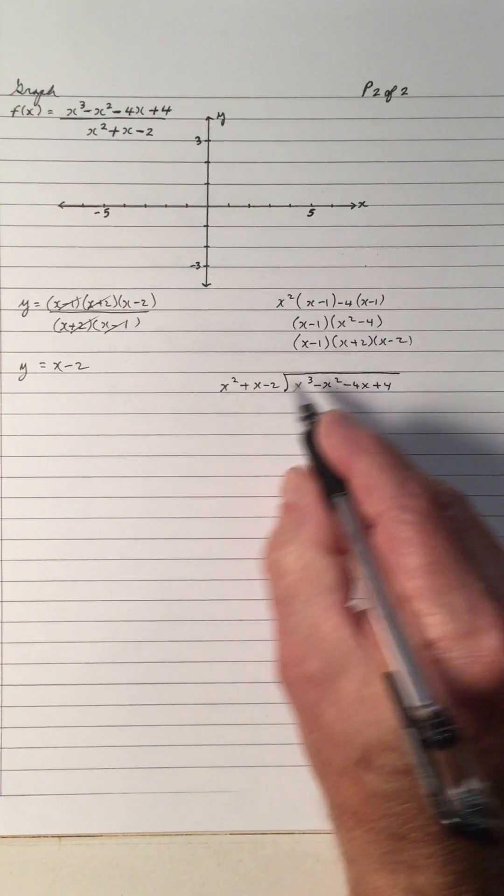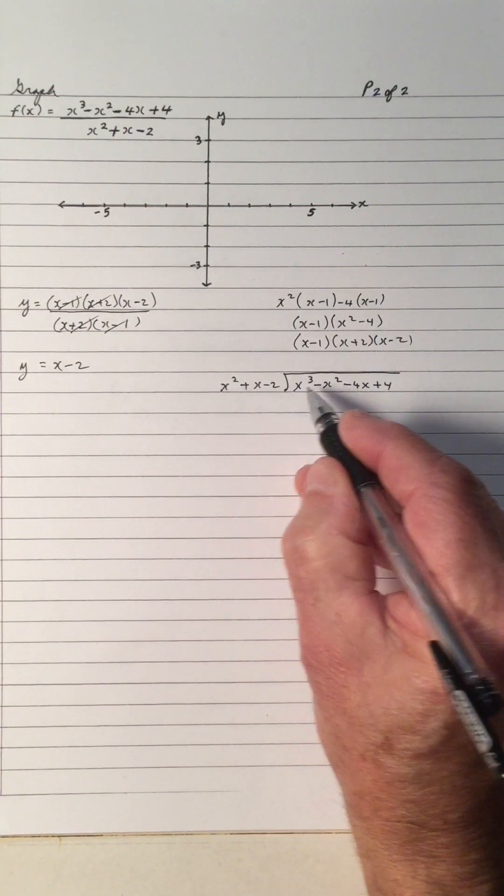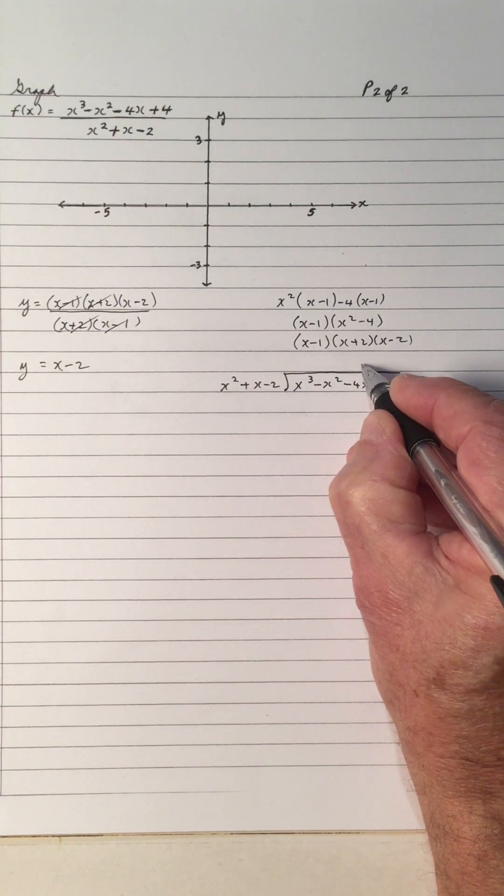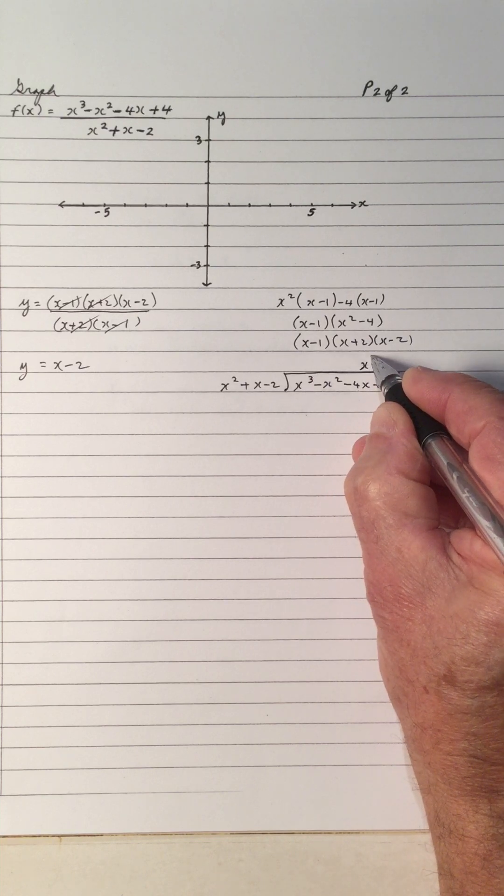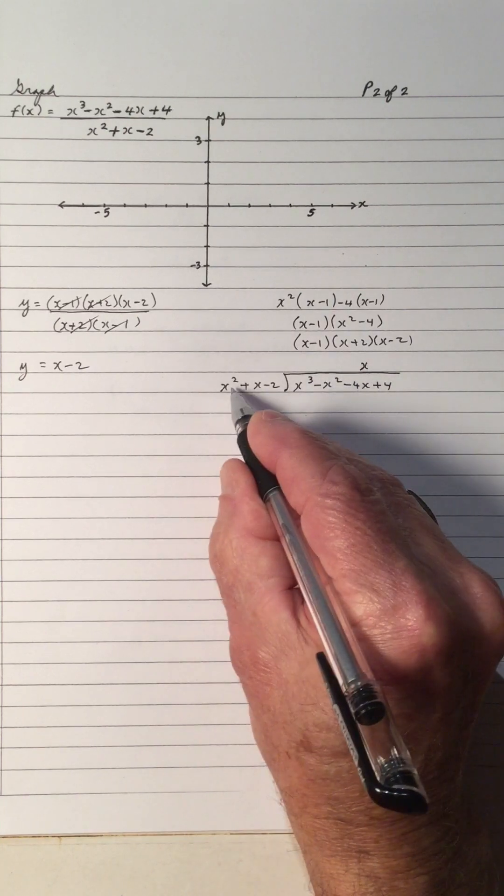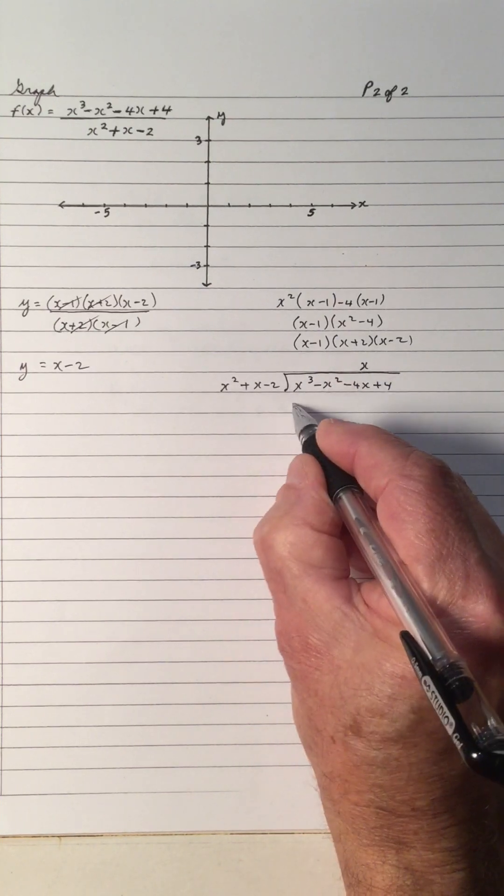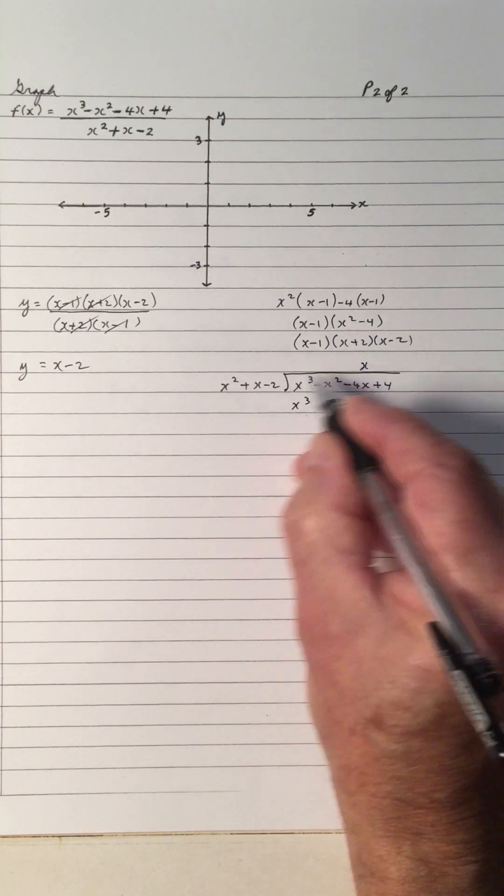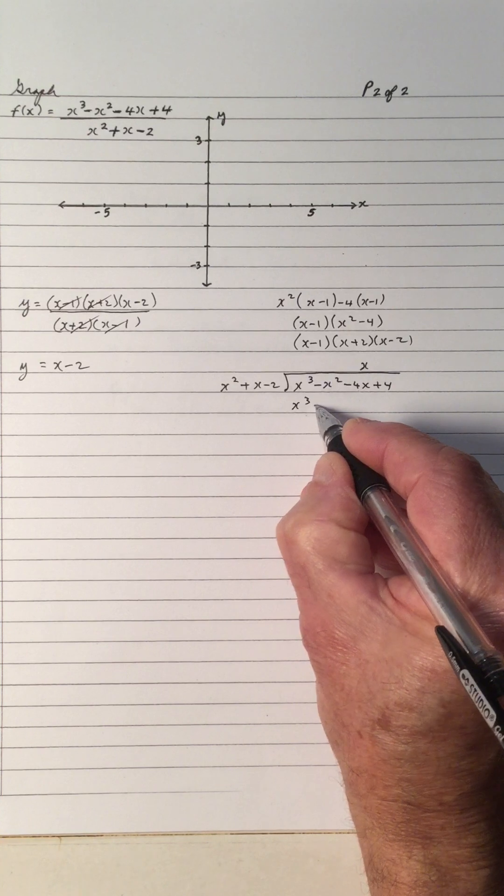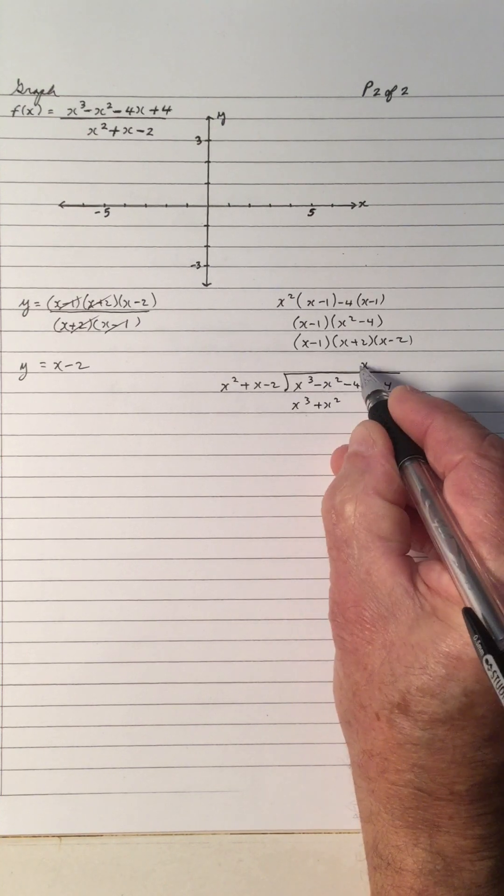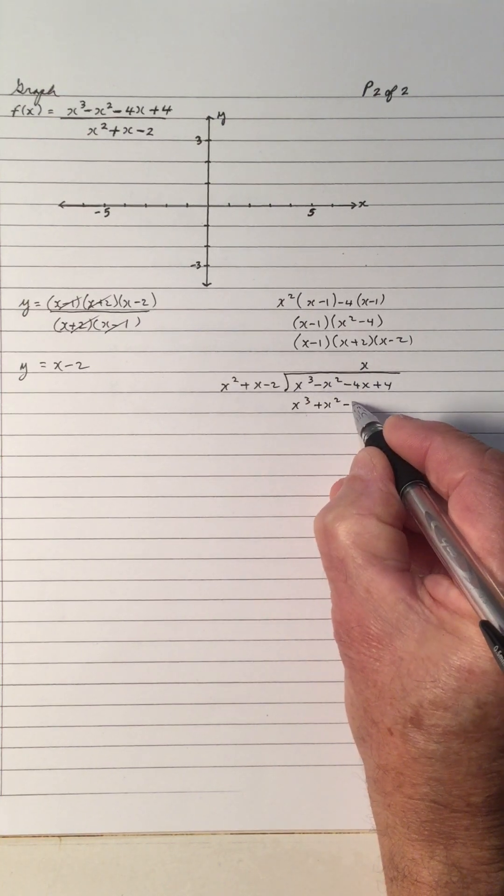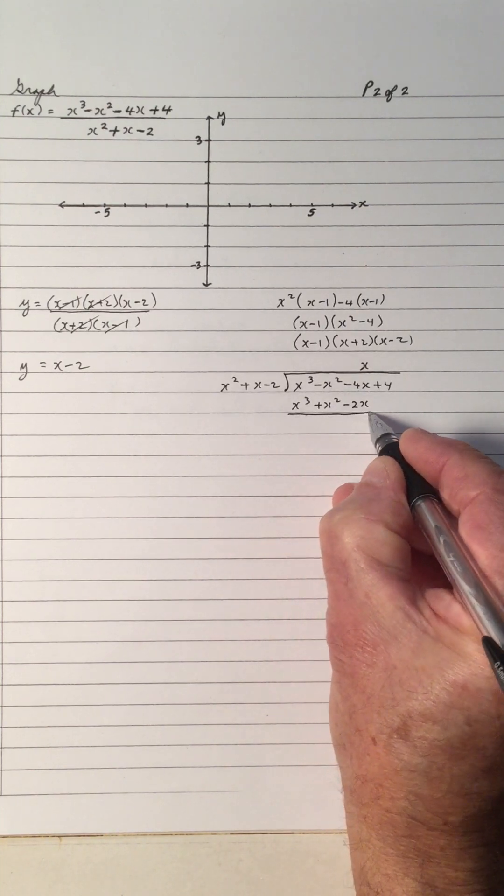So let's do this long division. So x squared into x cubed is an x, so the x goes above the x, the same as the power of 1. Multiply back. x squared times x is x cubed, x times x is x squared, x times negative 2 is negative 2x. Draw a line.